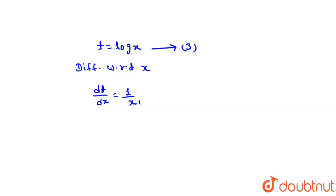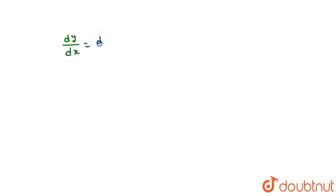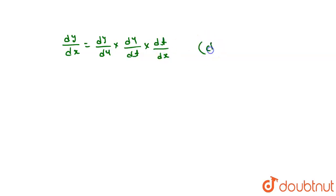Now we have to find dy upon dx. So we can write dy upon dx is equal to dy upon du, into du upon dt, into dt upon dx. Here we apply the chain rule, and we know the values of dy upon du, du upon dt, and dt upon dx.